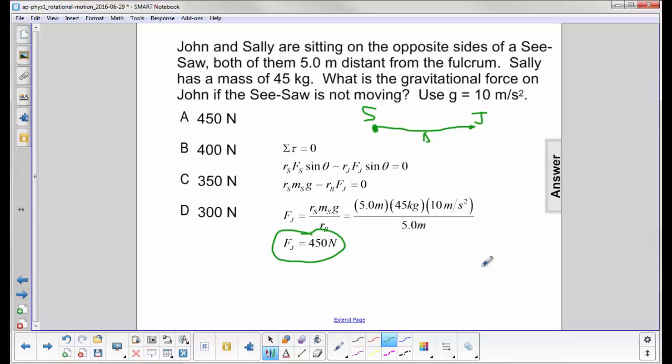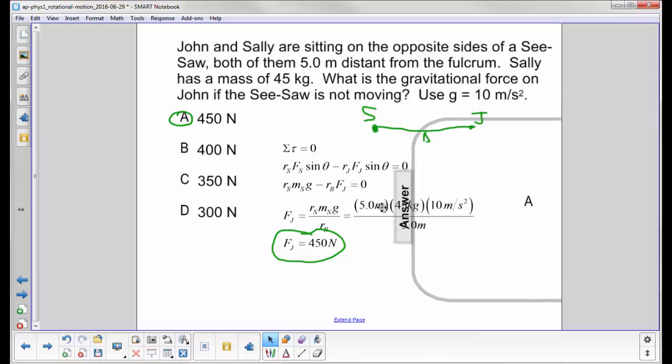A quicker way to do this is to use physics intuition. They're both equidistant from the fulcrum, and since they're balanced, whatever mass Sally has, John has to have. The lever doesn't move, so John would also have to be 45 kilograms. You could have done this without the math just by doing careful reasoning. So 450 Newtons - the answer is A.